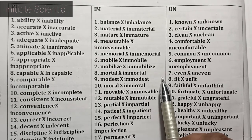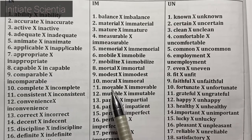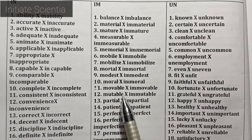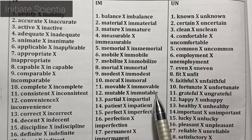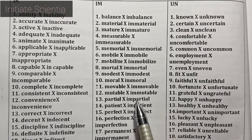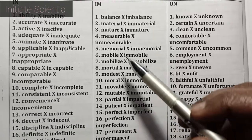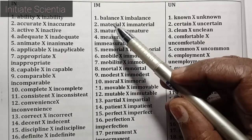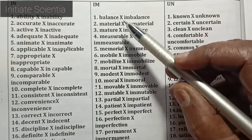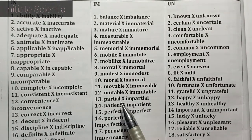More IM prefix words: mortal – immortal, modest – immodest, moral – immoral, movable – immovable, mutable – immutable. Mostly for words starting with M, you get IM before that — you call it a prefix. Partial – impartial, patient – impatient.